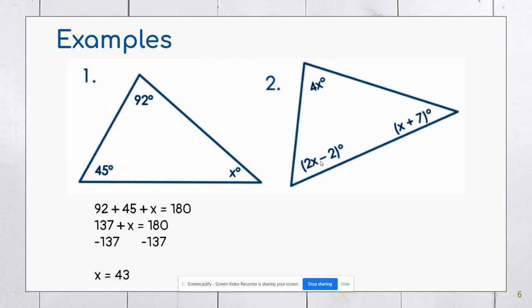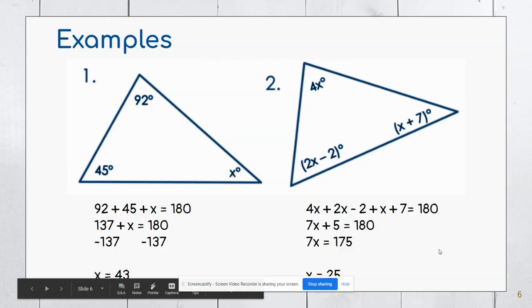For example two, I'm going to do the exact same thing. I'm going to add 2X minus 2, 4X, and X plus 7, and I'm going to set them equal to 180 degrees. I'm going to combine like terms. I have X's and constants that I need to combine. So combining those together gives me 7X plus 5, subtracting 5 from both sides gives me 7X equals 175, and then dividing by 7 leaves me with X equals 25.